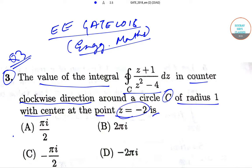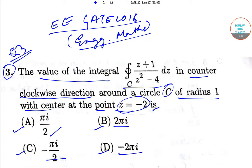The options are: option a, pi i by 2; option b, 2 pi i; option c, minus pi i by 2; and option d is minus 2 pi i. So let's begin.